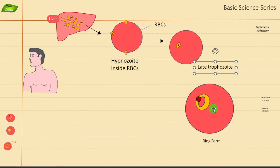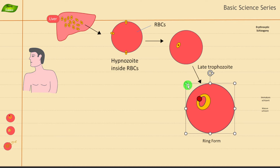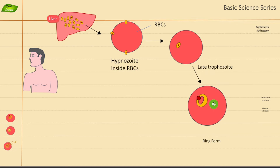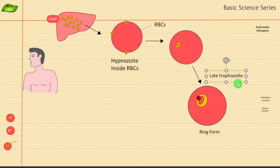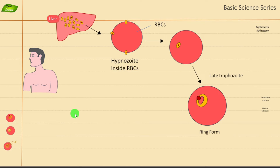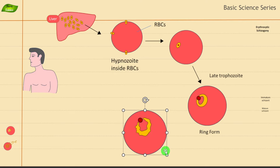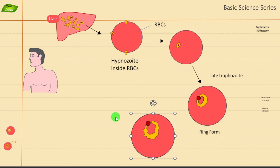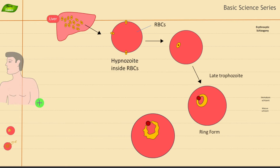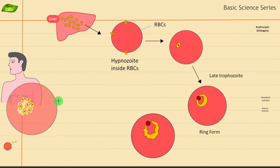Using this arrow to show the next steps: the first stage is the ring form, then early trophozoite, then late trophozoite. After that, you will have an amoeboid-shaped structure getting formed inside the RBC in the erythrocytic stage. Let me also move the human figure here for layout clarity.